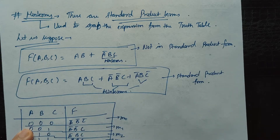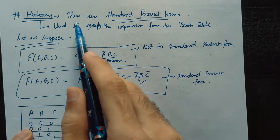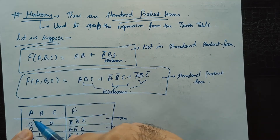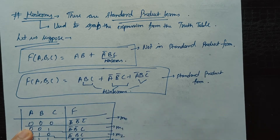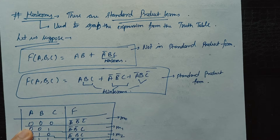We will now discuss min terms and max terms. Min terms are standard product terms. Min terms and max terms are used to derive a Boolean expression from a truth table, so that we can realize a function or circuit.